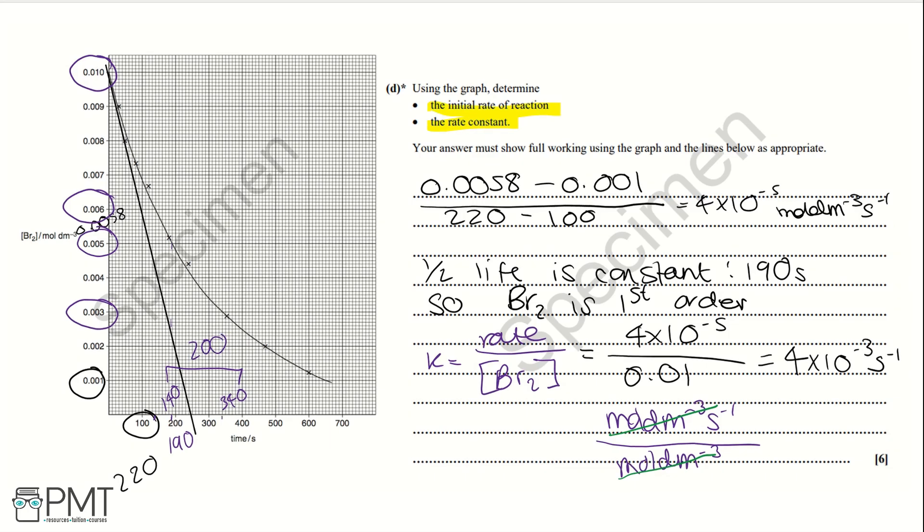For this question, we can use the rate equation because we know it will depend on just bromine. Because bromine is first order or has a first order reaction. And the order with respect to HCOOH is 0 order. And therefore will not be factored into the rate equation. Because if anything to the power of 0, well that's going to equal 1. So it would be 1 times the concentration of bromine. And so we don't need to include it in the rate equation.